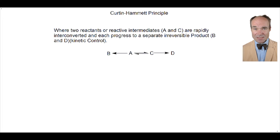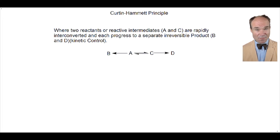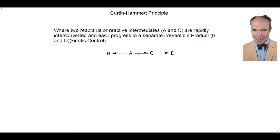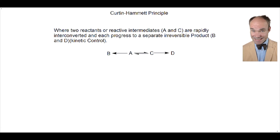A and C are in equilibrium. A transforms to B, and B can't become A, whilst C becomes D, but D can't become C.